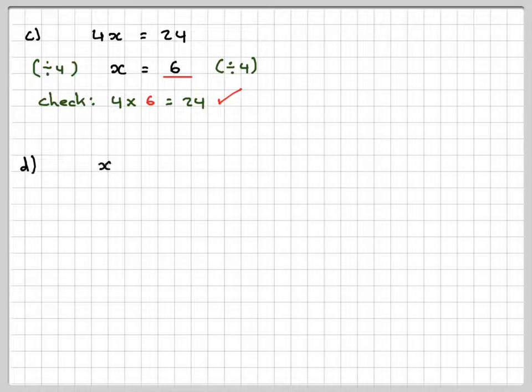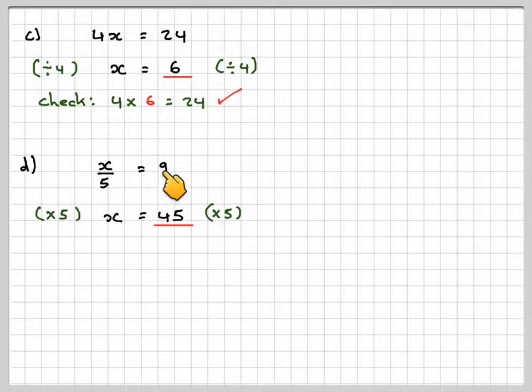D: x divided by 5 equals 9. So here we're dividing by 5. The opposite of dividing by 5 is to multiply by 5. So if we multiply this side by 5 we get x, and if we multiply this side by 5, 9 times 5 gives 45. The check: 45 divided by 5, as x is 45, 5 into 45 goes 9. That is correct.